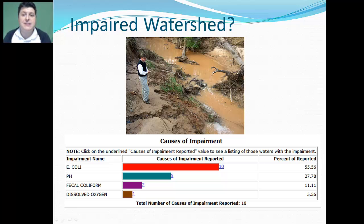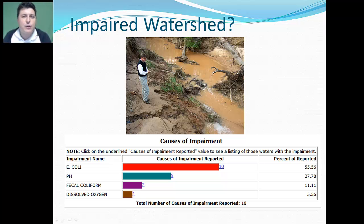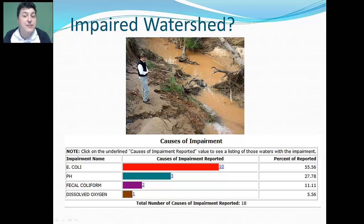Both natural events and human activities will affect watersheds. Natural events such as storms, fires, and droughts can suddenly alter a watershed's condition at large scales. While some natural events have negative impacts, these events are often critical for long-term ecological health. For example, a fire may damage a forest, but it also rejuvenates it by spreading the seeds of key species and adding necessary nutrients to the forest floor.